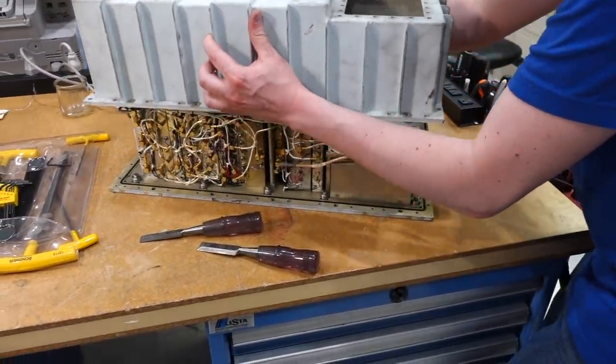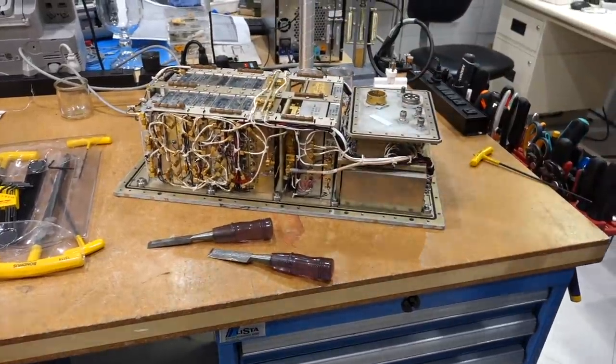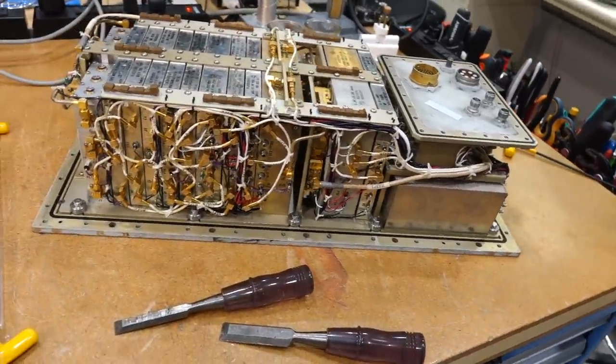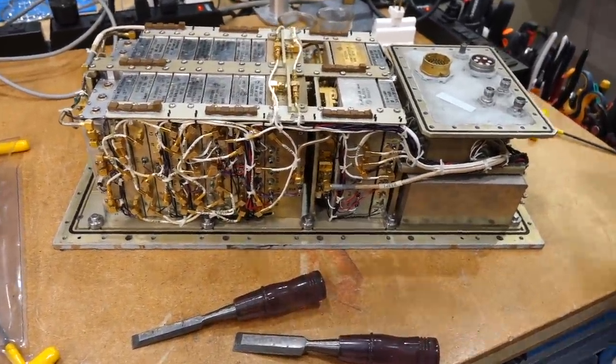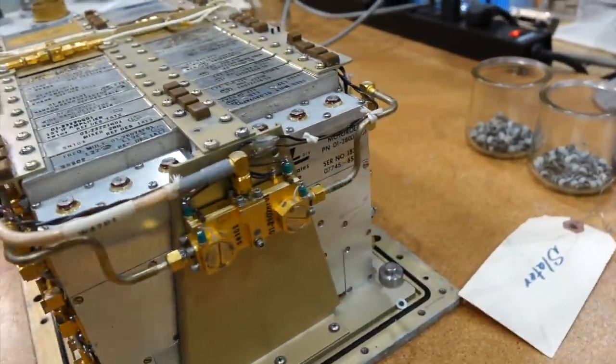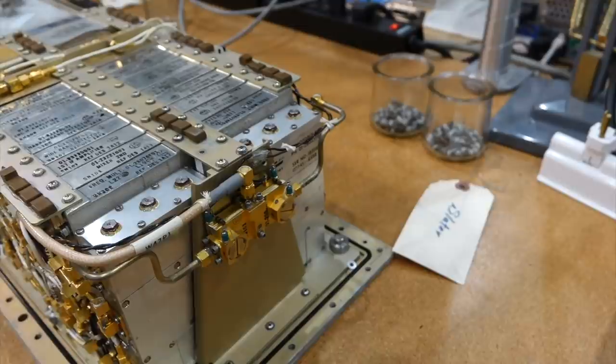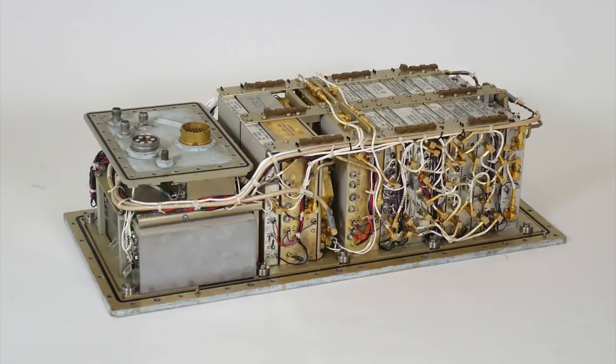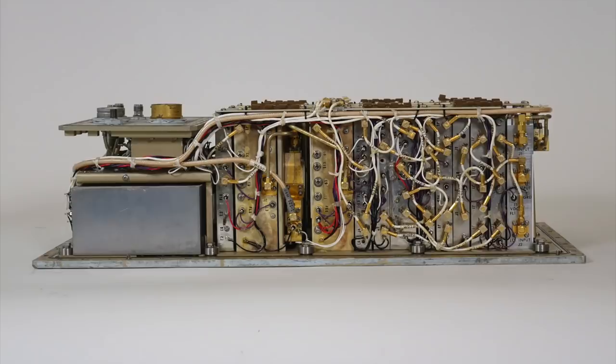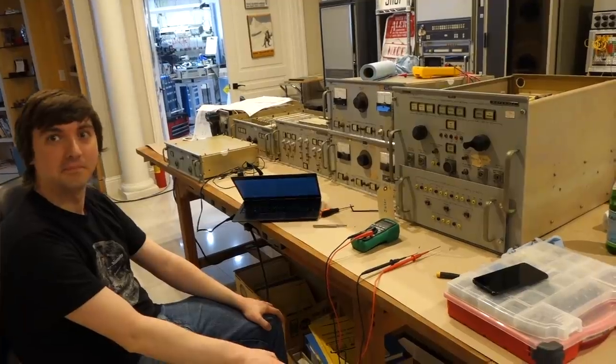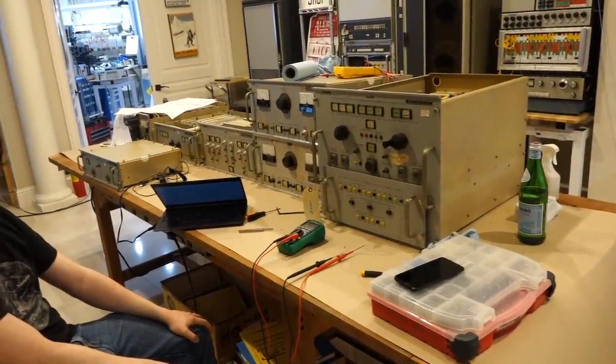Removing the cover reveals a myriad of analog electronic modules. It looks large and complicated, until you realize that you are looking at not one, but five microwave radios. This box actually contains two S-band receivers and three S-band transmitters. Considering it was made in the mid-1960s and is all solid state, it truly was a miracle of miniaturization at the time.